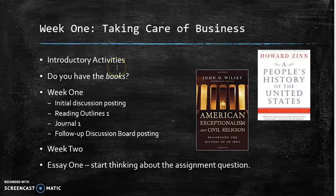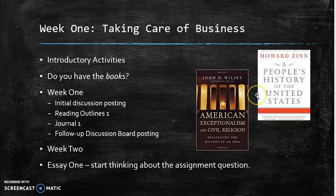Number one: have you completed the introductory activities on our course page? I think they're fairly self-explanatory. If you have questions, let me know. Number two: do you have the course books? That information is available to you — which books, etc. — on the course map. If you don't have the books, you need them ASAP, especially A People's History of the United States. That's the one you need first.